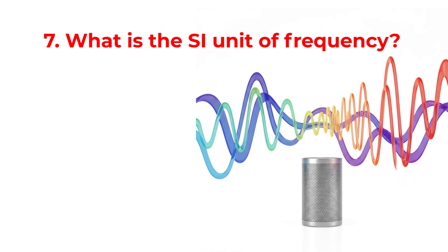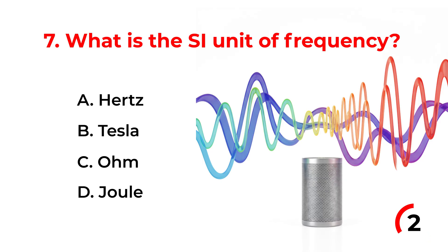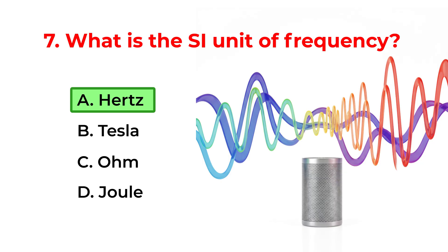What is the SI unit of frequency? A. Hertz. B. Tesla. C. Ohm. D. Joule. Correct answer is option A. Hertz.